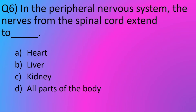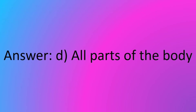Question No. 6: In the peripheral nervous system, the nerves from the spinal cord extend to dash. Option A: Heart. Option B: Lever. Option C: Cedney. Option D: All parts of the body. The answer is Option D: All parts of the body.